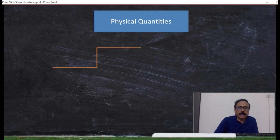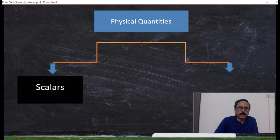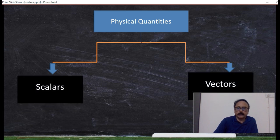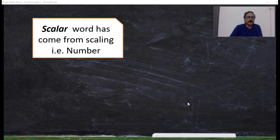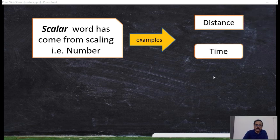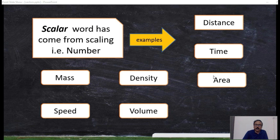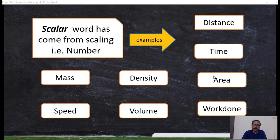Physical quantities can be classified into two categories. One is scalar, the other one is vectors. The scalar word has come from 'scaling' — it is simply a number. We can give many examples: distance, time, mass, density, area, speed, volume, and work done. These are all the physical quantities which are called scalars.